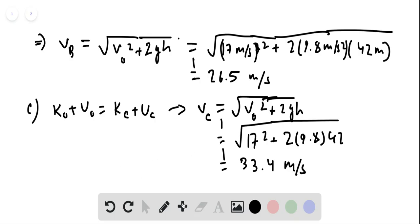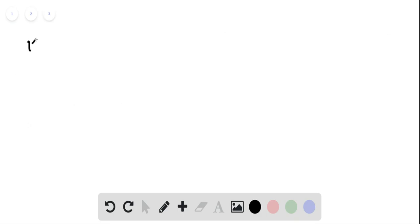All right, and part D, again, same idea, K-naught plus U-naught, this time will be equal to K-final plus U-final. So you're asked how high can it go, so for how high the car can go, K-f will be zero.